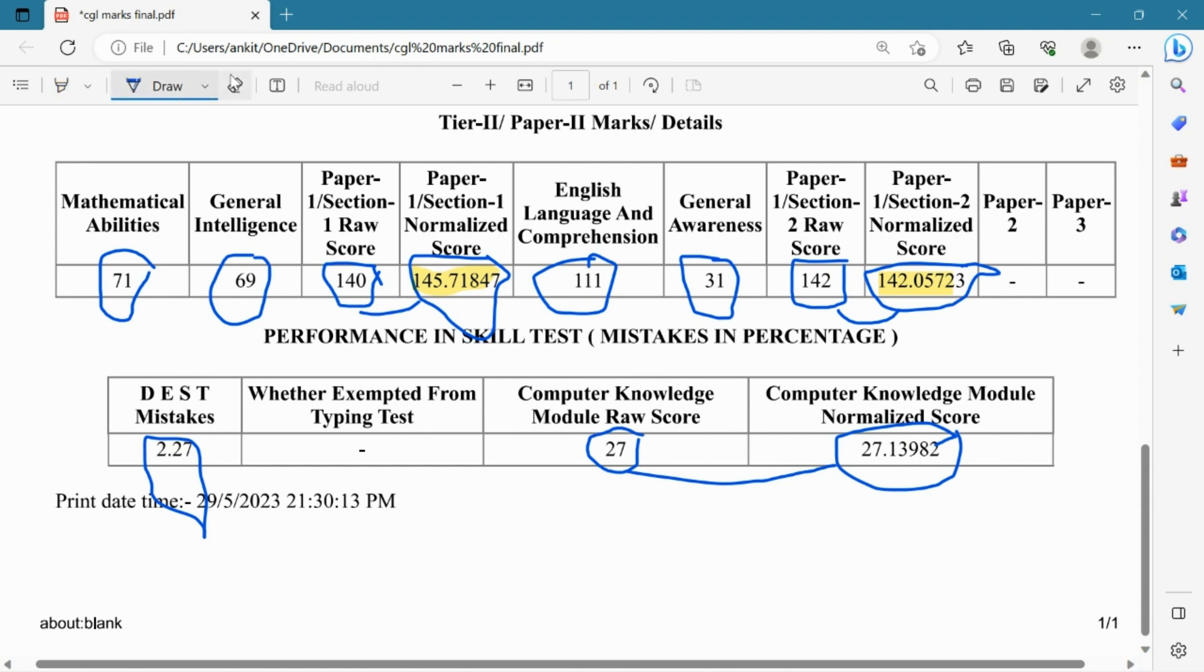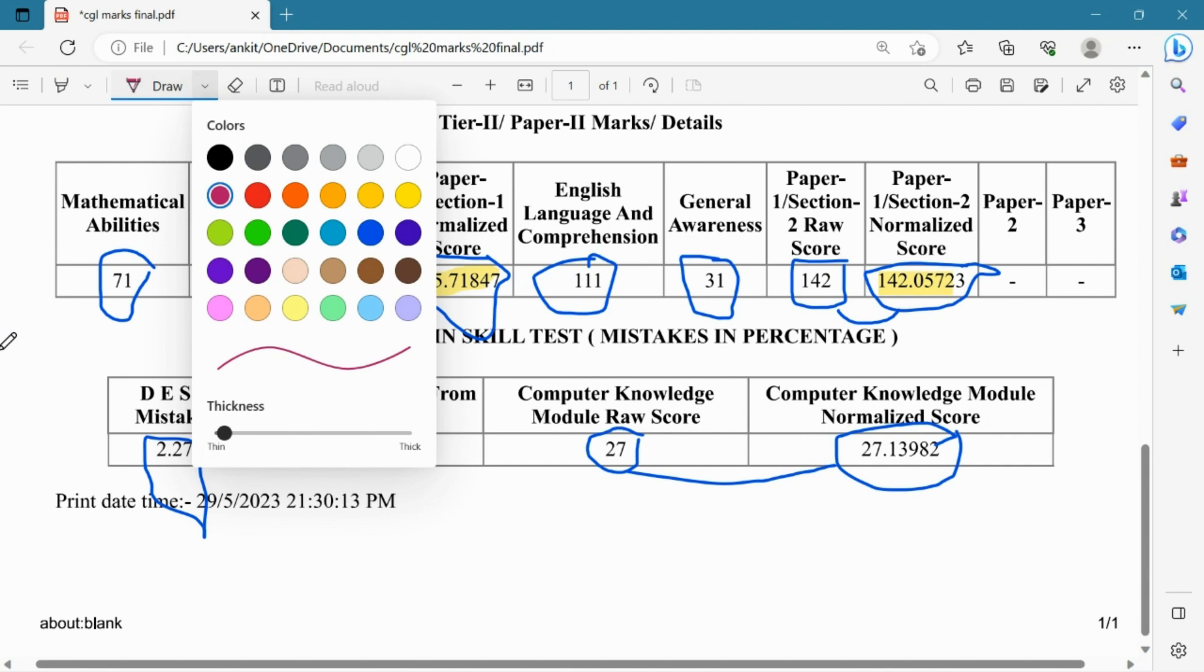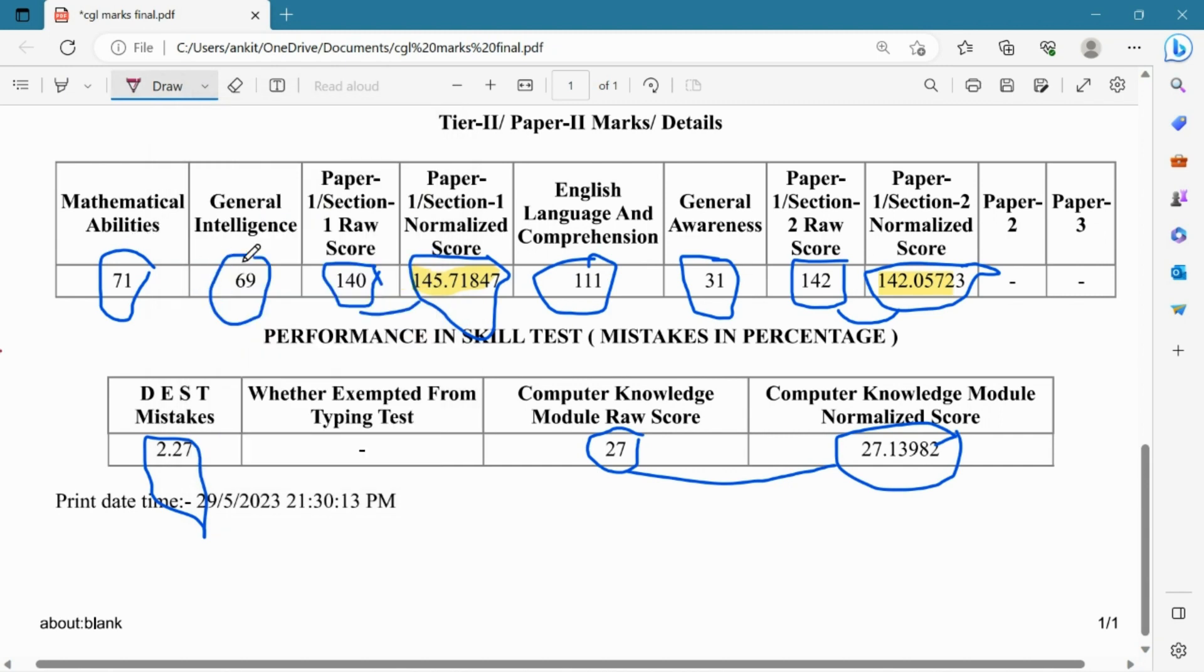First of all, section 1 which is Maths and Reasoning could have been better because both were easy. In reasoning, my 12 marks were cut. There were 3 statement-based questions and I attempted those 3, but they were wrong. So my 12 marks were deducted, which was disappointing.